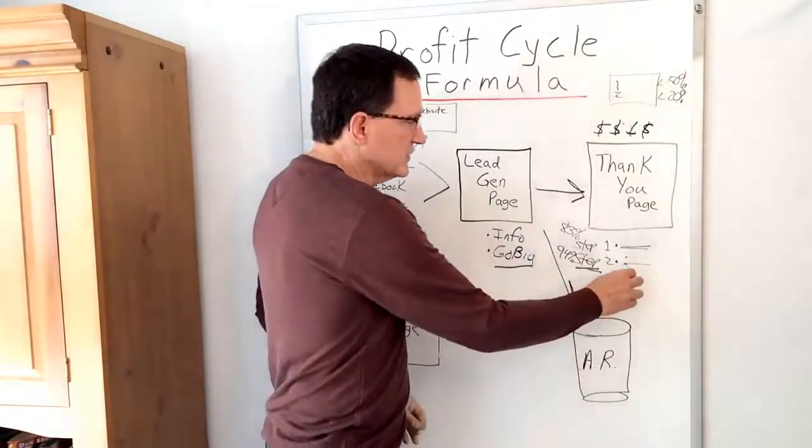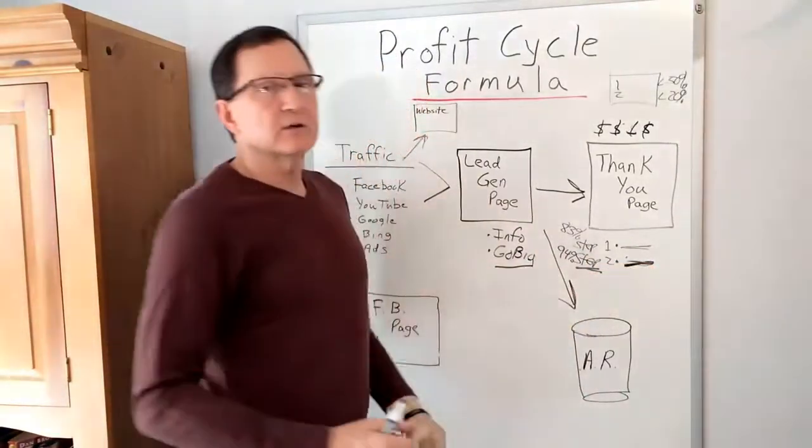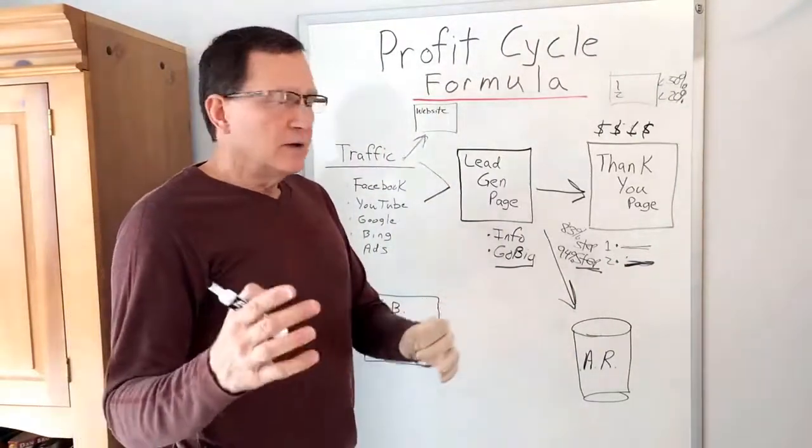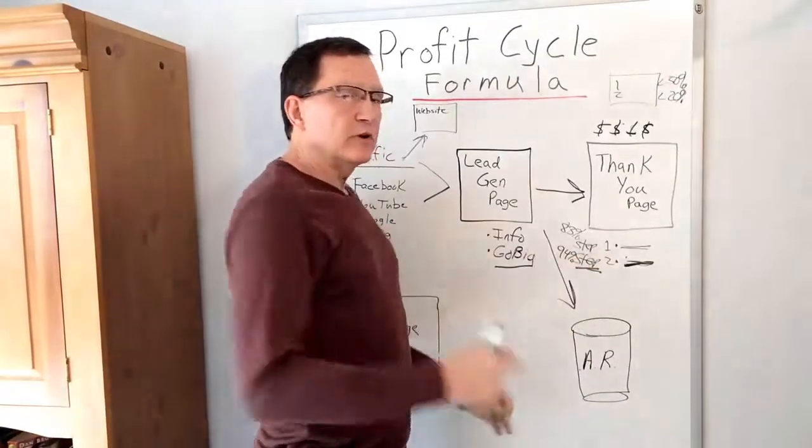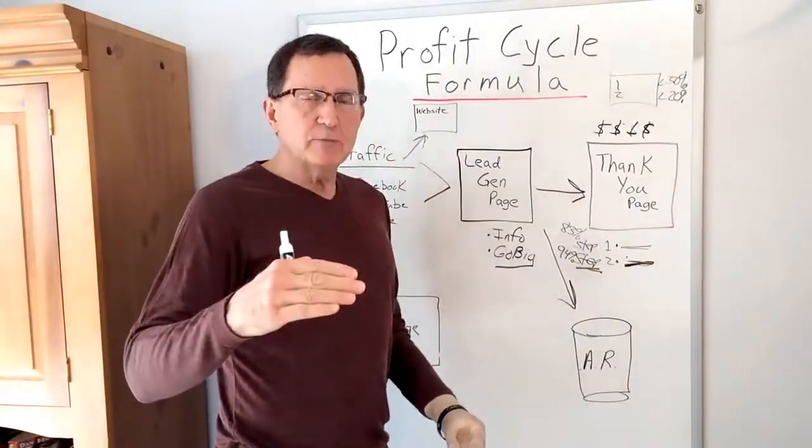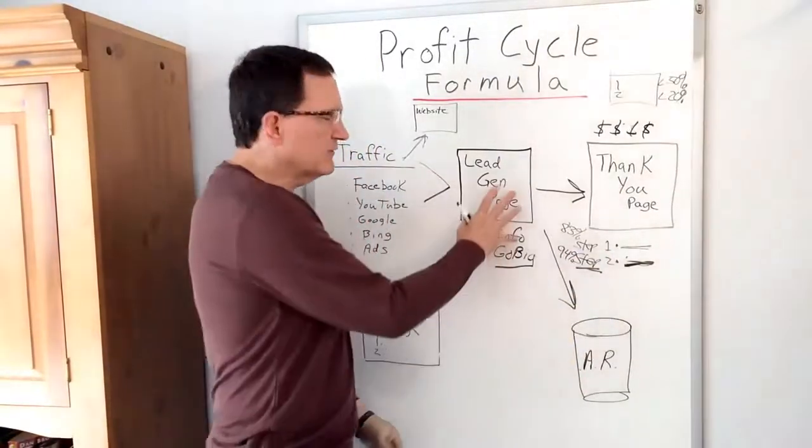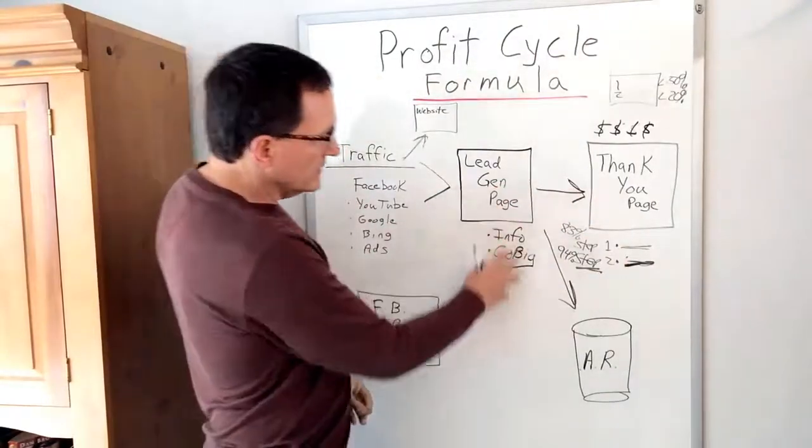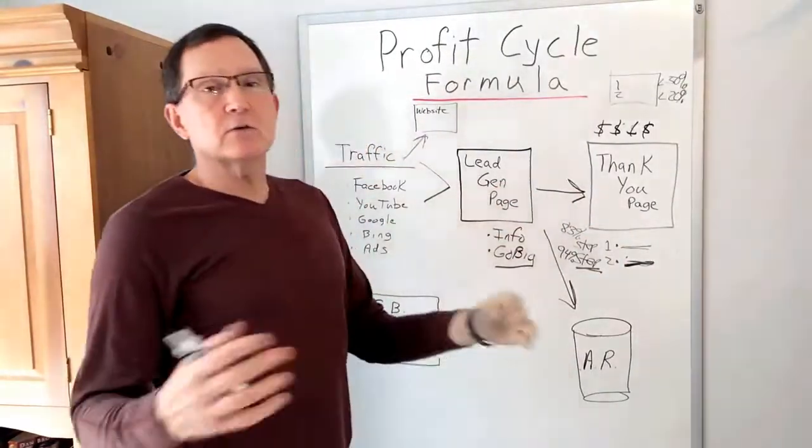So now we tell them step one and step two, take this action. This is where we can make the cash register ring. And it just depends on your business, what we offer there. There's no absolutes about what we offer. But we do want to have step one, step two, because that's what humans like. We've got them in the front door. Now we're going to sell them.